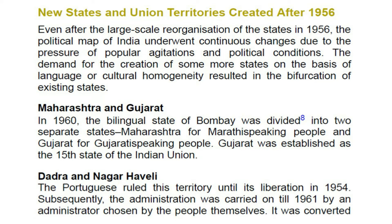New states and union territories created after 1956: Even after the large-scale reorganization of the states in 1956, the political map of India underwent continuous changes due to the pressure of popular agitations and political conditions. The demand for creation of more states on the basis of language or cultural homogeneity resulted in the bifurcation of existing states. Maharashtra and Gujarat: In 1960, the bilingual state of Bombay was divided into two separate states — Maharashtra for Marathi-speaking people and Gujarat for Gujarati-speaking people. Gujarat was established as the 15th state of the Indian Union.